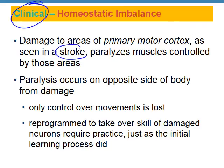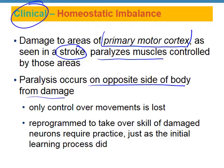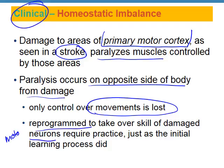Another clinical topic: if a stroke damages the primary motor cortex, it can paralyze muscles — usually on the opposite side of the body from where the damage occurred. So brain damage on the right side affects the left side of the body. You lose movement control, but you can reprogram — getting damaged motor neurons to synapse with the muscle. This is why some stroke patients, with physical therapy, may regain functional use of the affected side of the body.